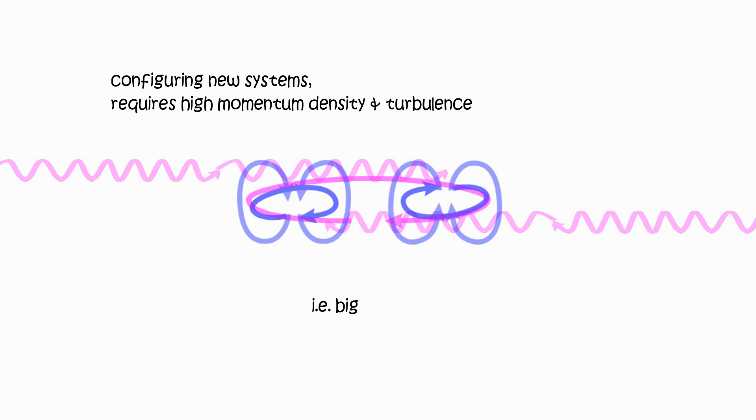Configurating field systems requires high density and turbulent trajectories. For example, big bang, relativistic collisions, in the nucleus, etc.